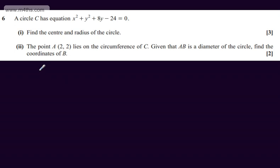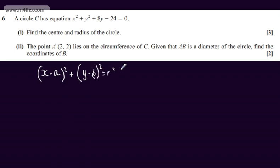We can put the equation of the circle in the form x minus a, all squared, plus y minus b, all squared, is equal to r squared. This gives us a centre at a, b, and it gives us a radius of r.